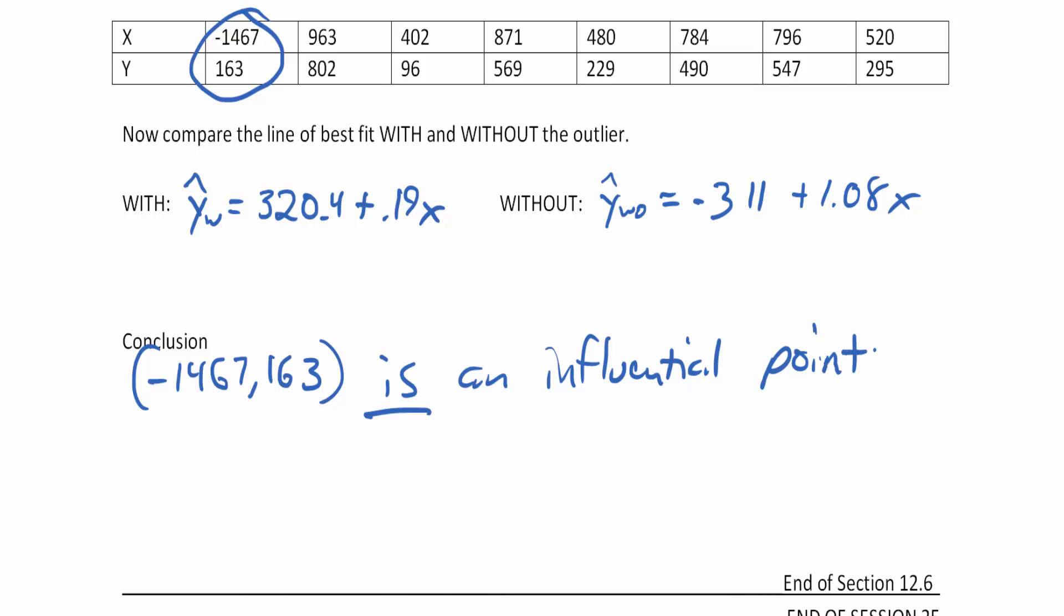Now, if you happen to take a look at those two graphs before and after, before you took out the influential point, you might have noticed that in the first example the outlier was kind of in line with all of the other dots, where in the second example the outlier was not in line with all those dots. And that's another kind of easy way to see if you have an influential point or not.